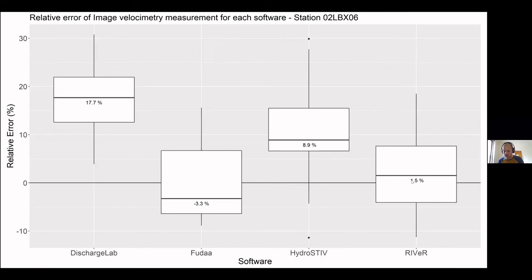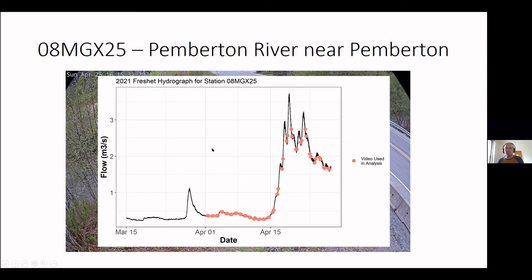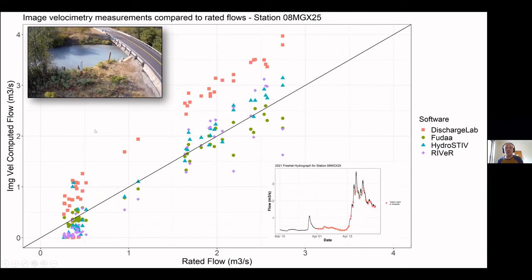Those are the results from Castor River. This is Pemberton River, the other site we tested. Similarly, we selected freshet videos — two videos per day on this site — at a much lower magnitude of only 3.5 cubic meters per second. The results show similar findings: Discharge Lab was biased high, and that can be brought down. Due to time, I won't show the relative error, but this shows we're looking at this at multiple sites.